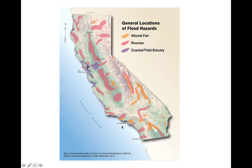Those are our major California natural hazards. They fall into three categories: earthquake, volcanic, and storm. You need to know all of the different hazards for each category. I will see you in class.